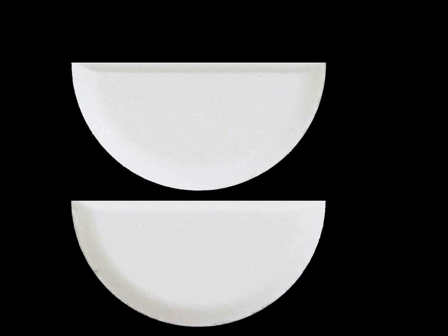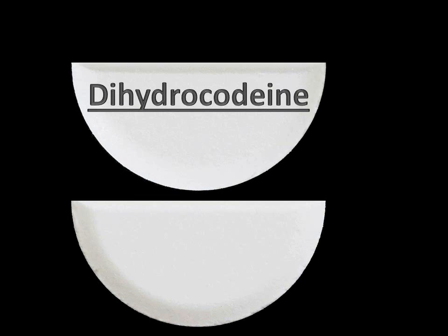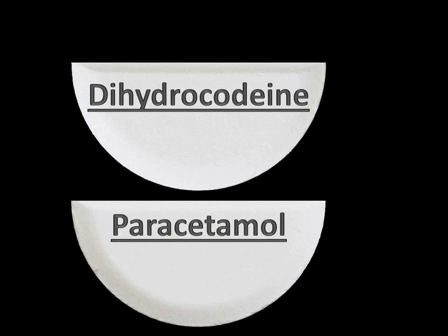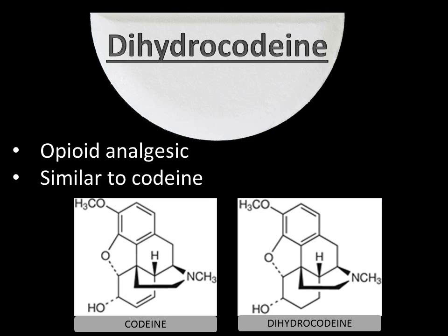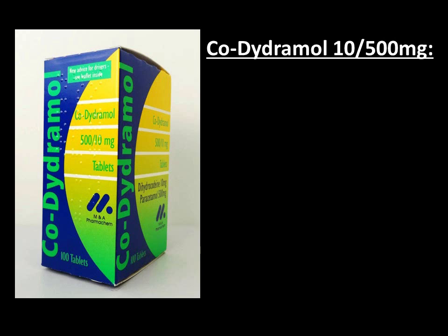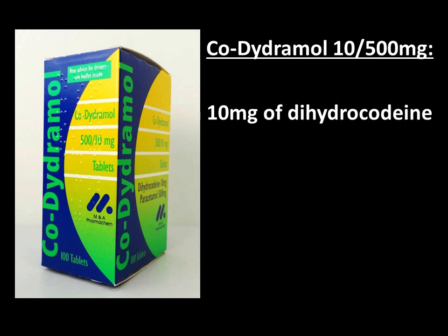Now looking at co-dydramol — again it's made up of two ingredients, but instead of codeine it contains dihydrocodeine in addition to paracetamol. Dihydrocodeine is a weak opioid analgesic, very similar to codeine, and you can see there's hardly any difference between the chemical structures of the two drugs. There are a few different strengths of co-dydramol, but the one used in our organisation is the 10/500mg tablets, containing 10 milligrams of dihydrocodeine and 500 milligrams of paracetamol per tablet.